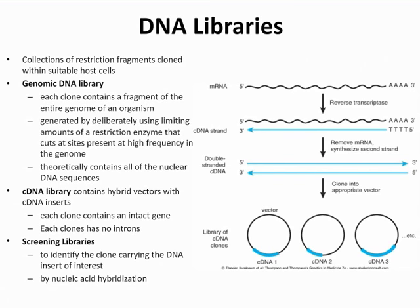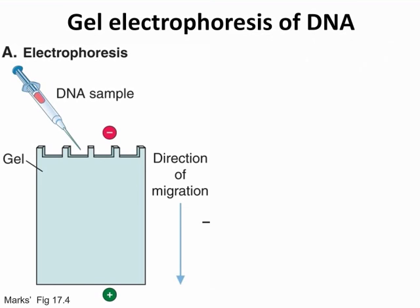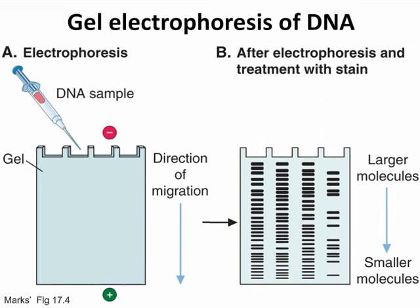Gel electrophoresis allows you to separate your DNA sample on the basis of size. There is an electrical field with a negative end at the top and a positive end at the bottom. DNA samples are inserted into wells of the agarose gel. Since DNA has a negative backbone, it migrates toward the positive end. Larger molecules migrate slower, while smaller molecules migrate quicker to the positive end.